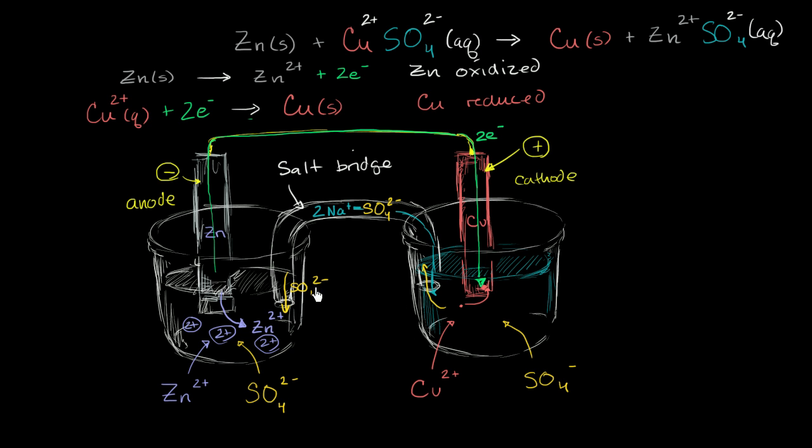And you can actually look up standard electrode potentials. I encourage you, you could do a web search for standard electrode potentials. And you'll see a bunch of voltages for different ions. And this is essentially a measure relative to hydrogen. This is all relative to hydrogen. How much does this ion want to grab its electrons?